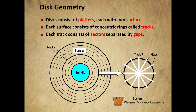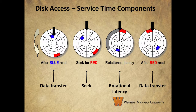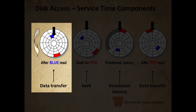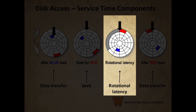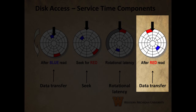The platters each have two surfaces divided into concentric rings called tracks. These tracks are broken up by gaps into individual sectors. Let's take a look at what goes into the time it takes to read information from a disk. Assuming the disk just read data in the sector colored blue, the time it takes to read that sector is called the transfer time. Then it needs to read data from the sector colored red, so the next step is to find that sector — this operation is called a seek. Then the platters have to rotate to the right place for the actuator arm to read from that physical location, which is called the rotational latency.